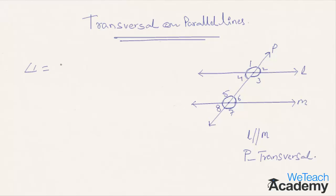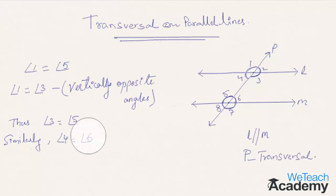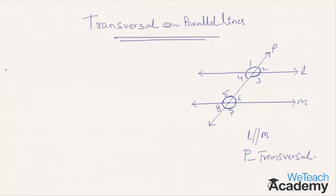Since corresponding angles are equal, angle one equals angle five. We also know that angle one equals angle three, since vertically opposite angles are always equal. By substituting, we can say that angle five equals angle three — these are the interior alternate angles. Similarly, angle four and angle six are the other pair of interior alternate angles, and they are also equal. Therefore, when parallel lines are intersected by a transversal, angles in each pair of alternate interior angles are equal.